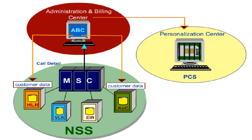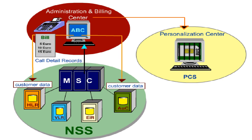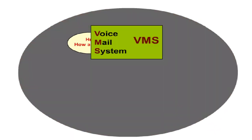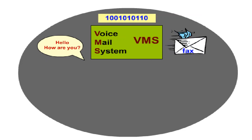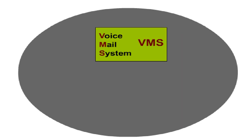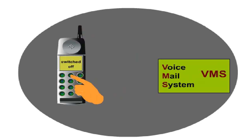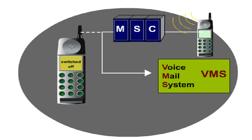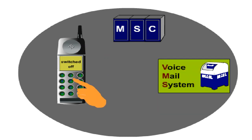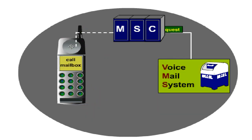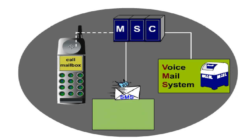The so-called call detail records are used in the Billing Centre for bill preparation. The Voicemail System, VMS, is a memory system for voice, data, and fax messages spread over the network — in other words, a large-scale answering machine. If a subscriber has switched off his mobile station or can't be reached for other reasons, the messages are not sent to his mobile station but are fed directly into the VMS and stored there. The subscriber can either request them from the VMS or he's notified via SMS.